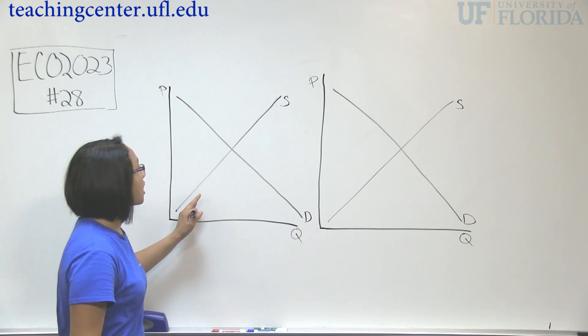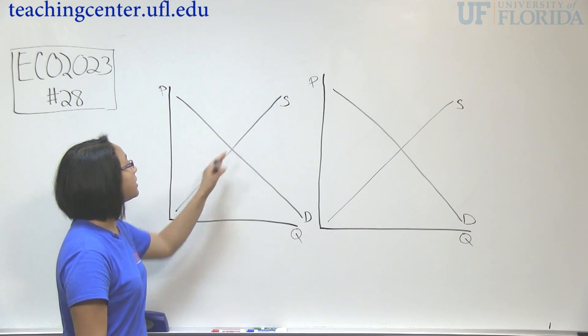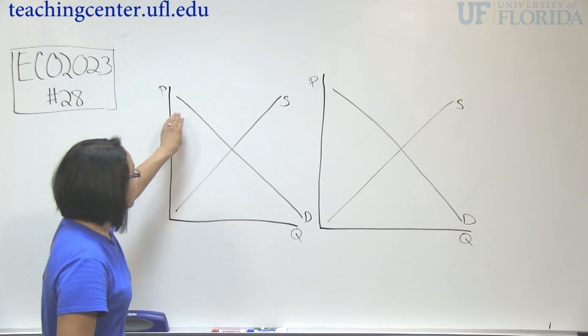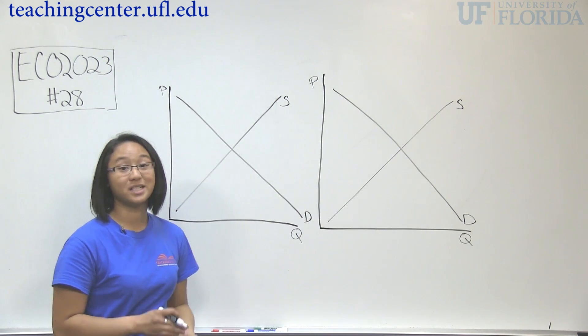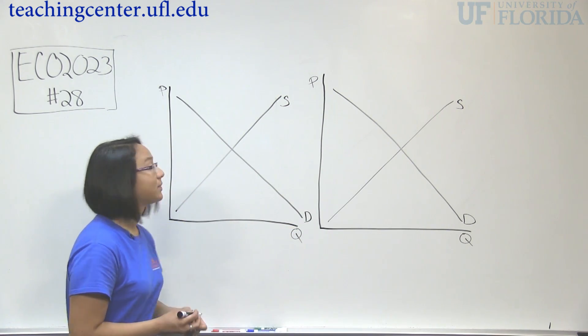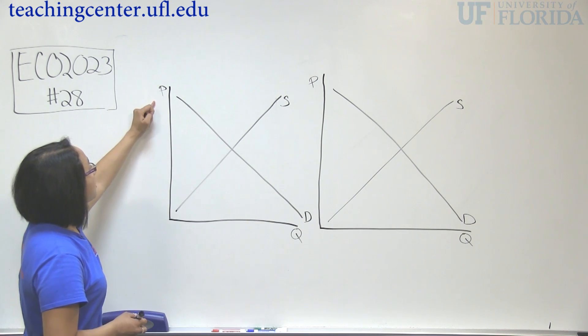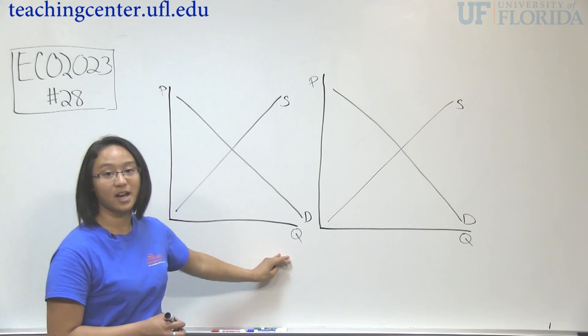So remember, supply curve is our upward sloping curve. Demand curve is downward sloping. I like to remember D for downward sloping for demand. And remember, we have our price on this axis and we have our quantity on this axis.